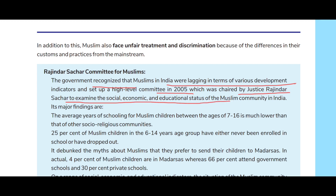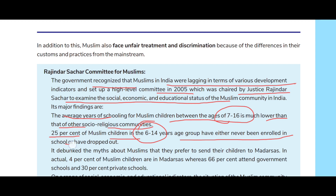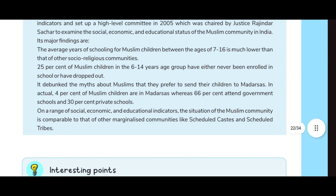Its major findings are: the average years of schooling for Muslim children between ages 7 to 16 is much lower than that of other socio-religious communities. 25 percent of Muslim children in the 6 to 14 age group have either never been enrolled in school or have dropped out. It debunked the myth that Muslims prefer to send their children to madrasas — in actual fact, only four percent of Muslim children are in madrasas, while 66 percent attend government schools and 36 percent private schools. On a range of social, economic, and educational indicators, the situation of the Muslim community is comparable to that of other marginalized communities like Scheduled Castes and Scheduled Tribes.